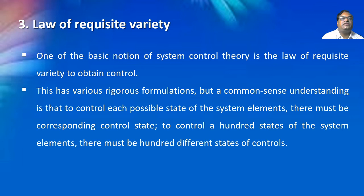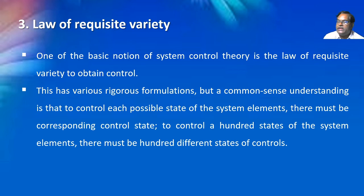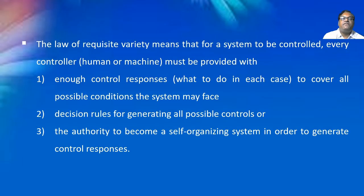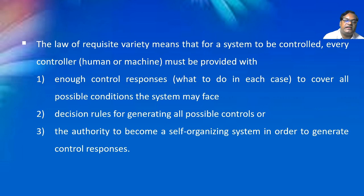The last concept is the law of requisite variety. One of the basic notions of system control theory is the law of requisite variety: to obtain control, for each possible state of system elements there must be a corresponding control state. To control 100 states of system elements, there must be 100 different states of controls. This means that for a system to be controlled, every controller — either human or machine — must be provided with enough control responses to cover all possible conditions the system may face, as well as decision rules for generating all possible controls and the authority to become a self-organizing system in order to generate control responses.